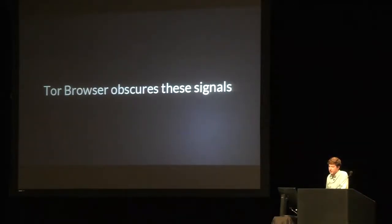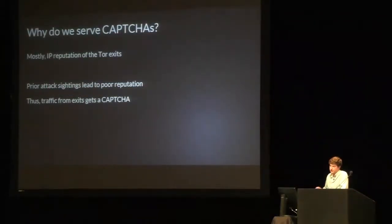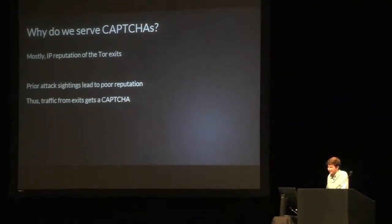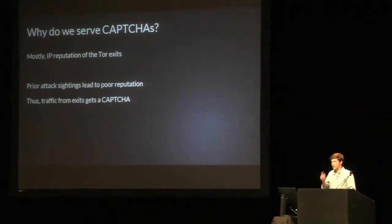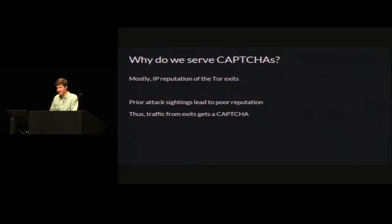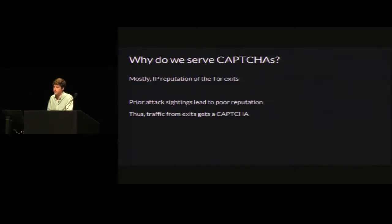And in the case of Tor Browser, the main signal that matters is IP reputation — really the IP reputation of the Tor exit relays. And as you can imagine, they're not great. It's mostly because enough attackers use Tor that our automated systems automatically assign bad ratings to most of the Tor exit relays most of the time. And when we have only IP reputation to go on and can only see that a request is coming from one of those sketchy IPs, we have to assume the traffic might be malicious, and we serve a CAPTCHA to try to disambiguate.